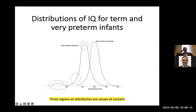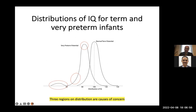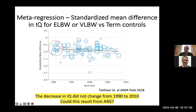Looking at IQ distributions, there are two curves: the normal IQ distribution for term babies and a sketch for very preterm infants. Preterms show three key differences: the peak value is about 10-15 IQ points below normal, the shoulder is wider in the lower IQ range, and there's a bump at the bottom for the very damaged babies — fortunately not too many of those any longer.